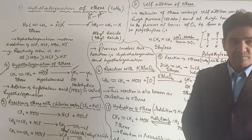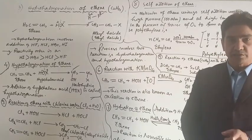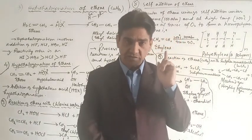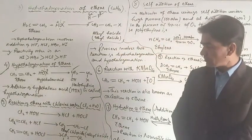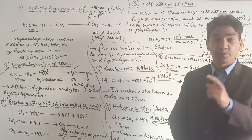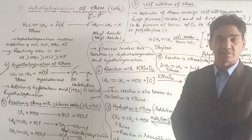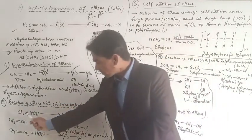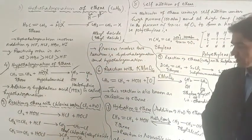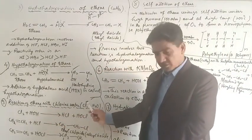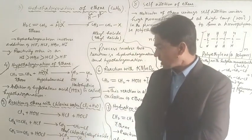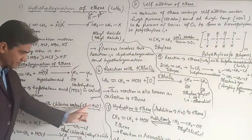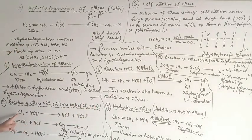The last lecture covered halogenation — addition of chlorine, bromine, iodine, or fluorine to ethylene. Now, the reaction of ethene with not just chlorine but chlorine water, bromine water, or iodine water — that is, mono-halogen water — where the halogen is mixed with water. When an alkene reacts with halogen water, two products are formed in the process.